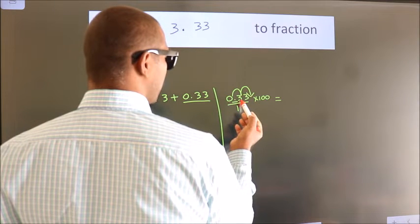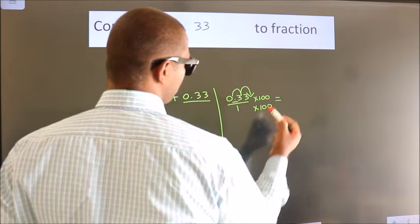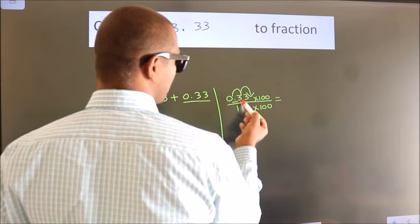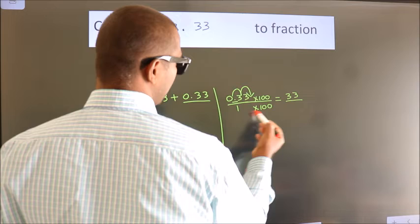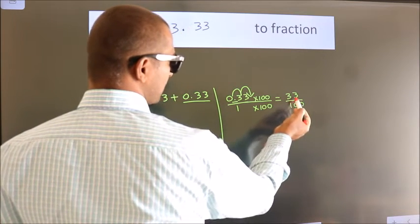Whatever we are multiplying in the numerator, in the denominator do the same. 0.33 into 100 is 33. 1 into 100 is 100. This is the fraction we got.